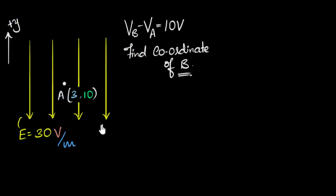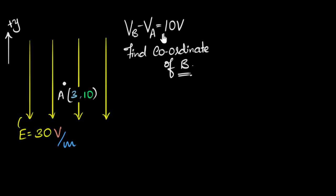Let's try one more problem. We're given an electric field pointing downward with a magnitude of 30 volts per meter. Point A has coordinates (3, 10), and a point B is such that the potential difference VB minus VA is given. Our goal is to find the coordinates of point B. Can you try this yourself first?